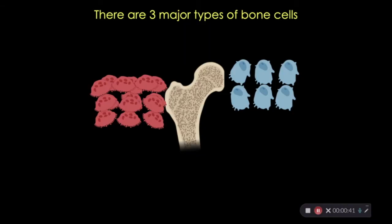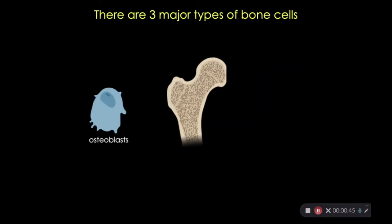Now, in bone, there are three major cell types: the osteoblasts, or bone makers, that are critical for forming bone; osteocytes, which are the mature bone cells that function as mechanoreceptors, among other things;